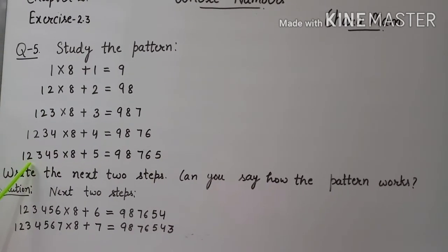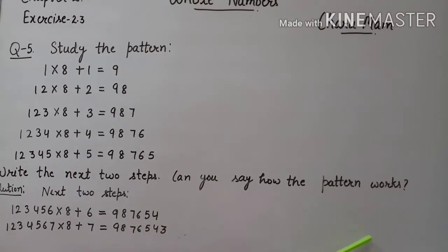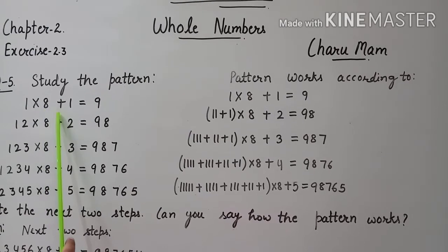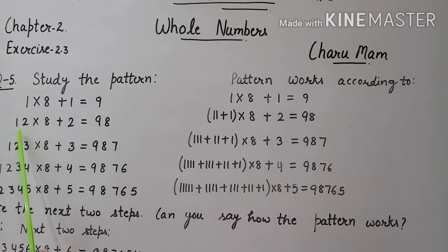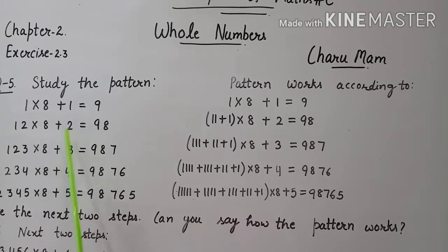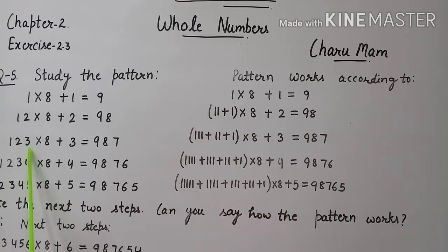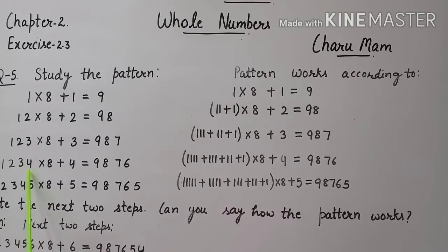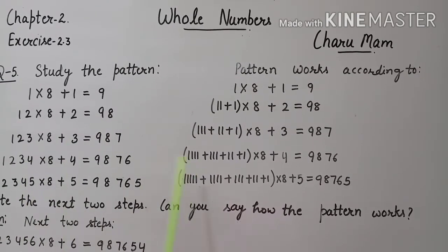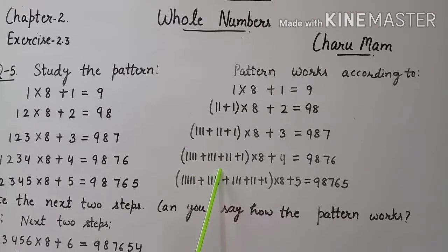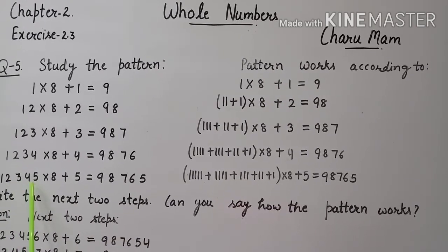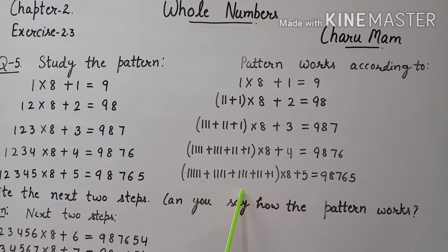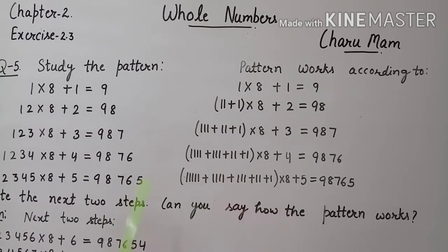जैसे हमने इस pattern को observe किया, उसी के according हमने next two steps write किये. अब इन्होंने पूछा: can you see how the pattern works? Pattern works according to: जैसे first में 1 × 8 + 1 = 9. 12 को हम 11 plus 1 लिख सकते हैं. 123 को हम 111 plus 11 plus 1 लिख सकते हैं. इस तरह से 1,234 को: 1 को 4 times write करेंगे, then plus 1 को 3 times, then plus 1 को 2 times, plus 1. ऐसे ही 12,345 में: 1 को 5 times, plus 1 को 4 times, plus 1 को 3 times, plus 1 को 2 times, plus 1. इस तरह से यह pattern work कर रहा है.